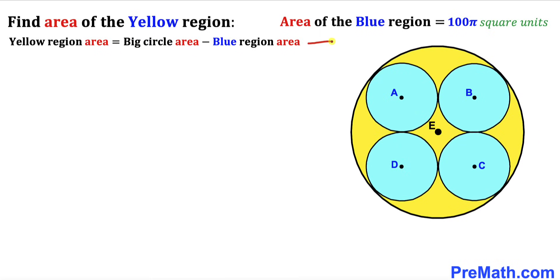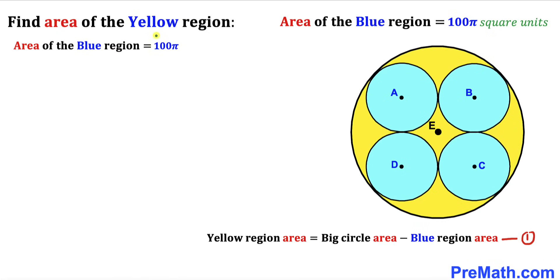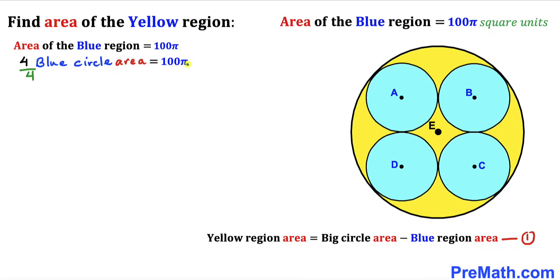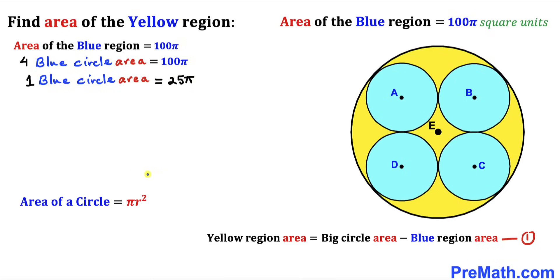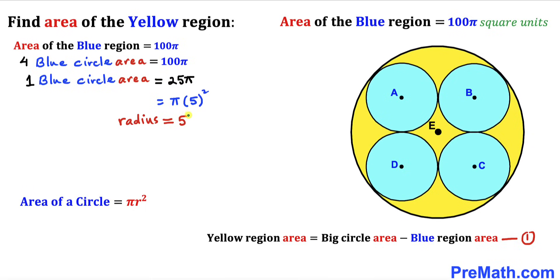Let's call this equation number one. We know the blue shaded region is 100π and it consists of four identical blue circles. Dividing both sides by four, the area of each blue circle is 25π. Recalling the area formula A = πr², we can write πr² = π·5², so therefore the radius of each blue circle turns out to be 5.